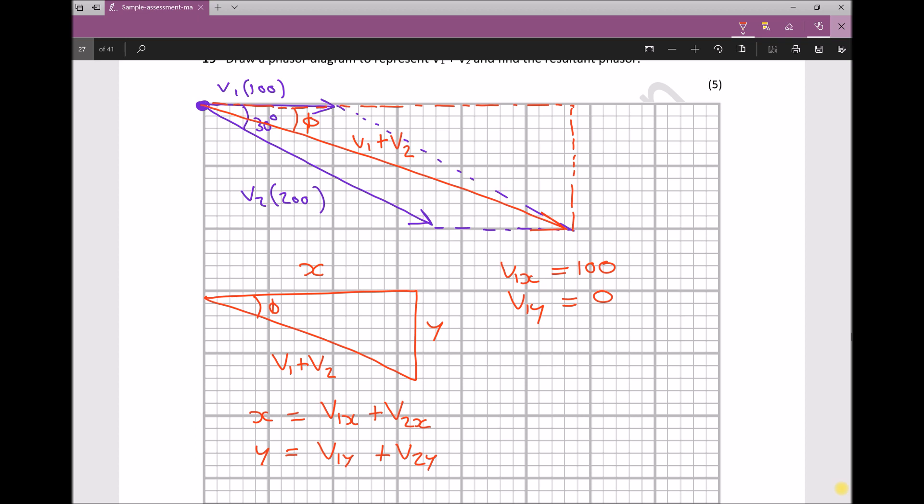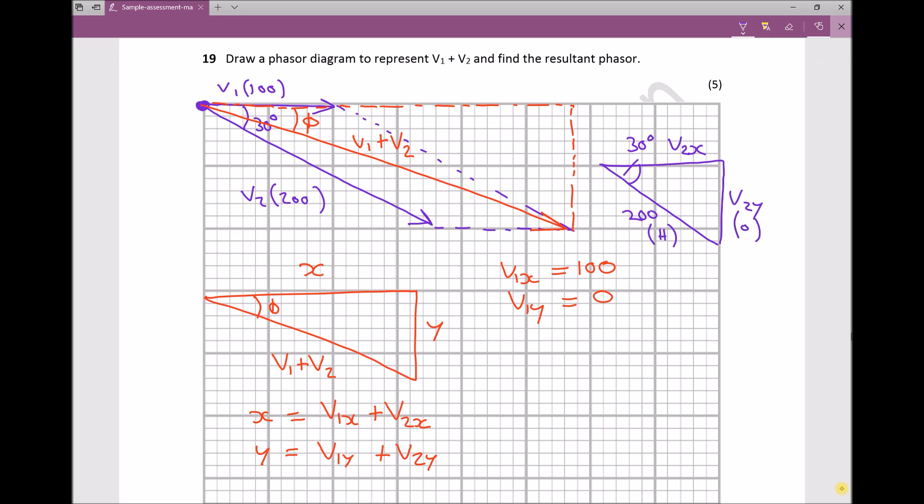V2 has both an x and y component. I'm sketching V2 with a length of 200. As a right angle triangle, the internal angle is 30 degrees. We need to find V2x and V2y. Labeling our triangle: the hypotenuse is the longest side, the opposite is opposite our angle, and the adjacent is the remaining side. Our two trigonometry formulas: adjacent equals hypotenuse cos theta, and opposite equals hypotenuse sin theta.